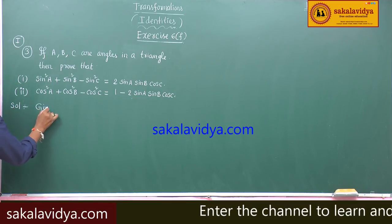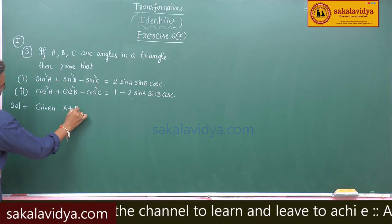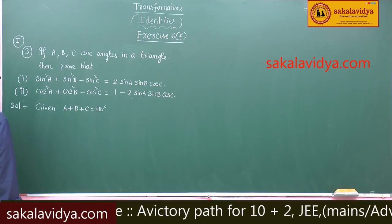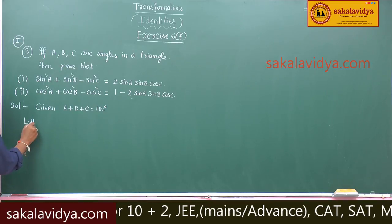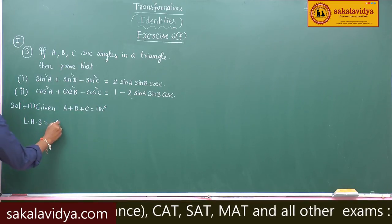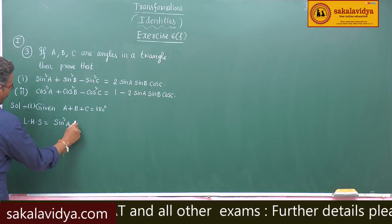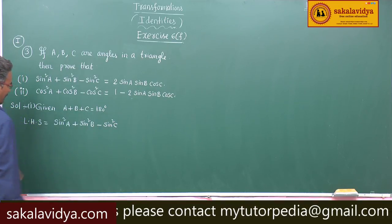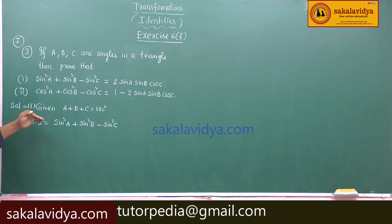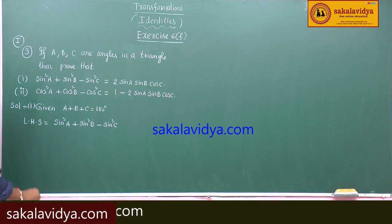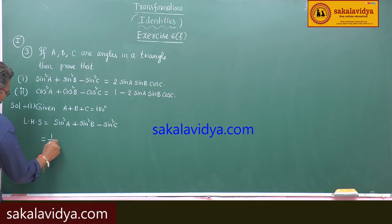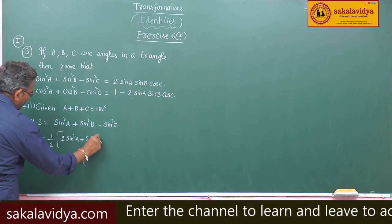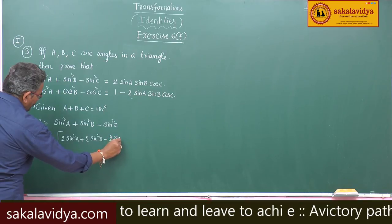Given that a plus b plus c is equal to 180 degrees. Let us consider the left hand side of the first problem: sin²a plus sin²b minus sin²c. Multiply and divide by 2, so we get 1/2 times (2 sin²a plus 2 sin²b minus 2 sin²c).